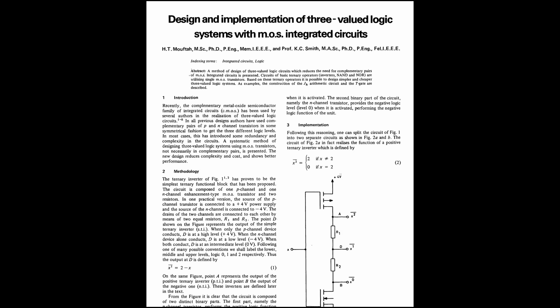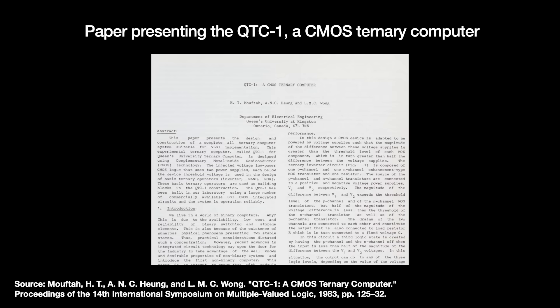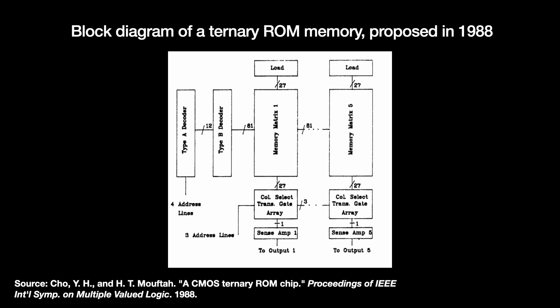First, it's big — two transistors, two resistors, and two power sources of opposite voltage. Second, no matter what the circuit outputs, there's a current constantly going, eating power and generating heat. Throughout the 1980s, Mufta and his colleagues proposed improved setups with fewer components and lower power draw — one had just two CMOS transistors and one resistor, creating the intermediate value by turning both off and leaving the resistor to pull a weak voltage. In 1983, Mufta's team presented the QTC1, a very basic computer with four units built using the CMOS-plus-one-resistor setup, able to fetch and write data from memory and do basic ternary math. A 1985 paper eliminated the power-hungry resistors altogether.